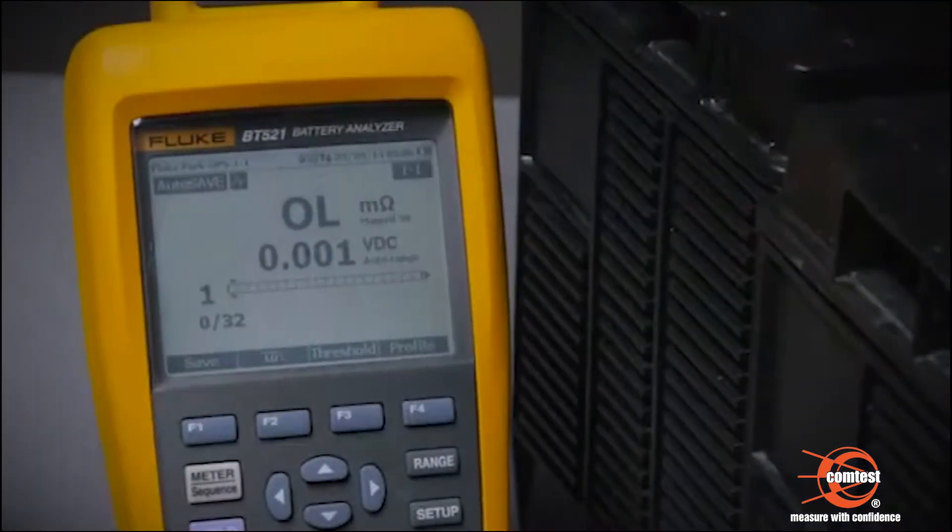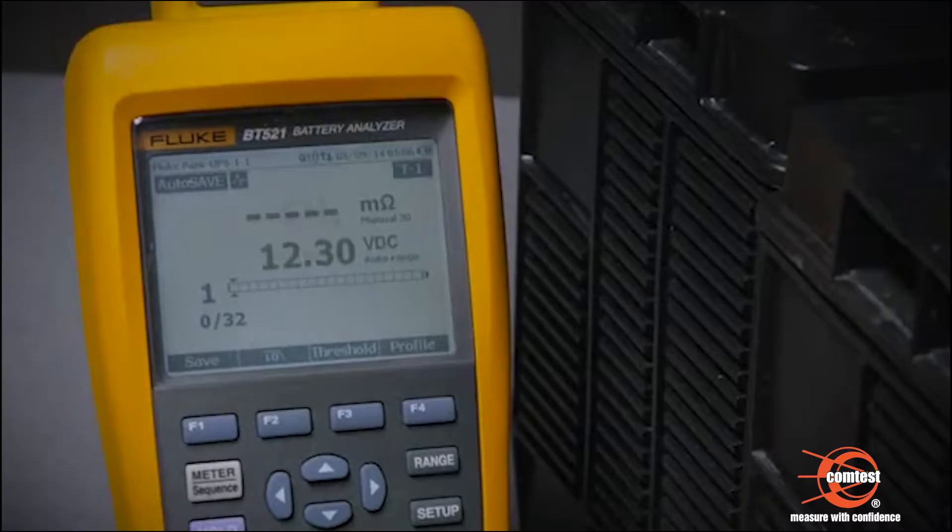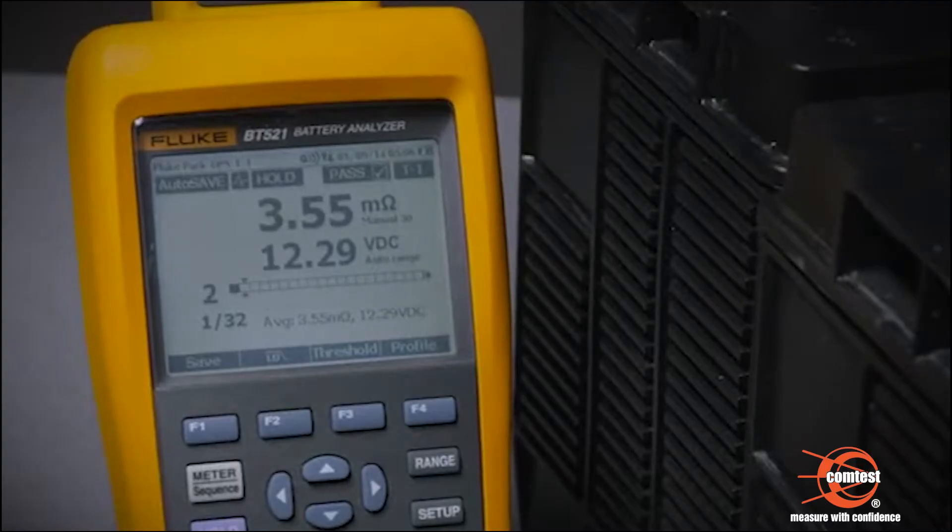The Fluke 500 series has unique battery string mode that walks users through the testing process, simplifying the workflow and significantly reducing the time needed to take multiple measurements.